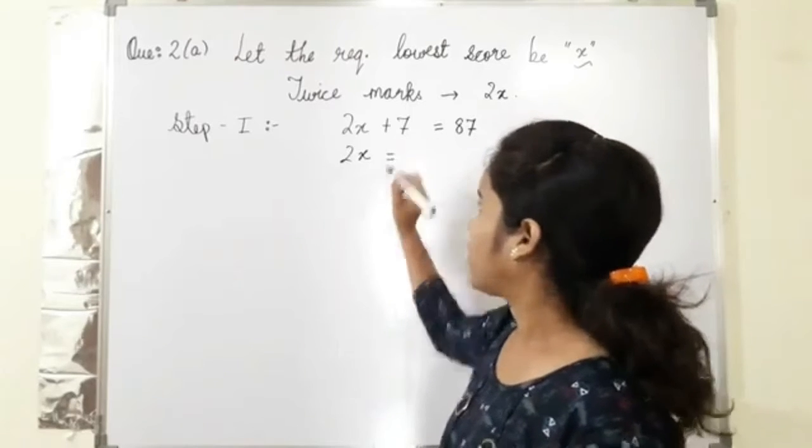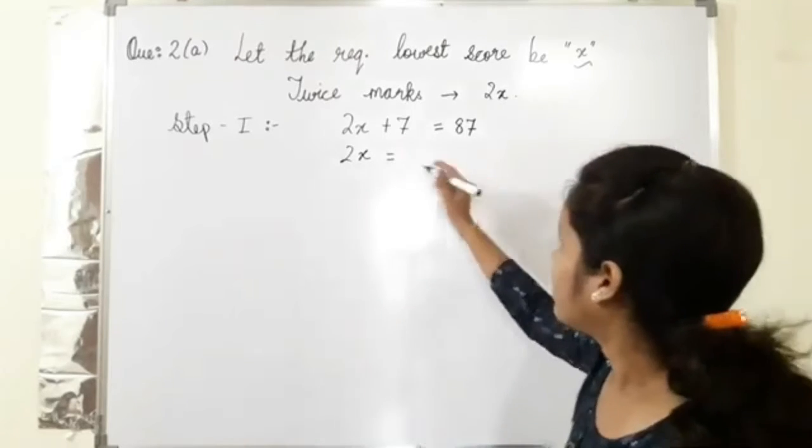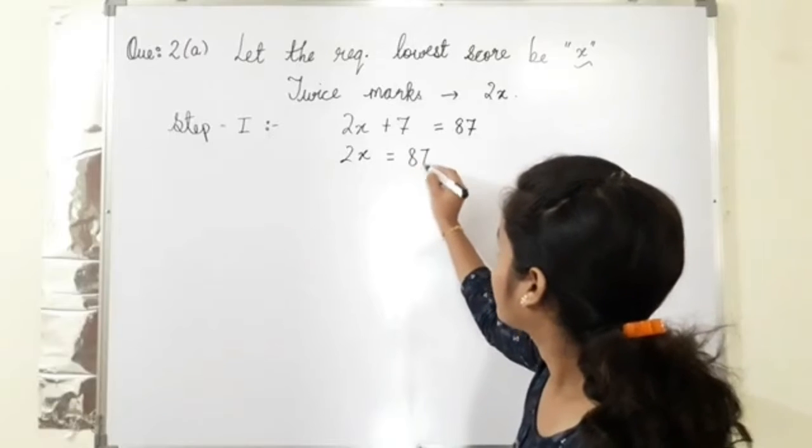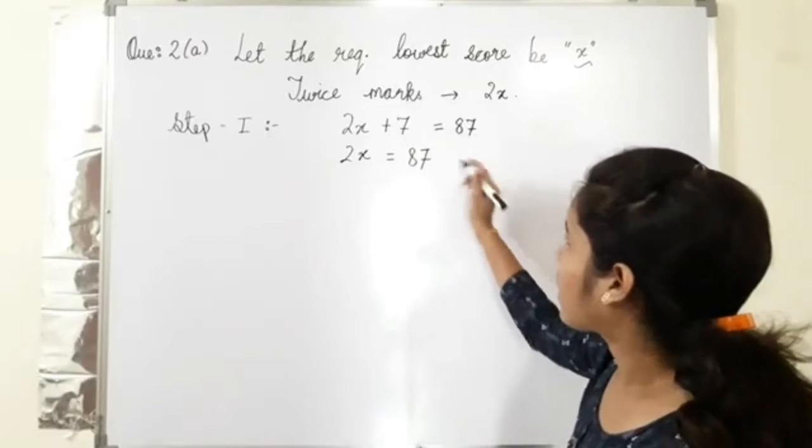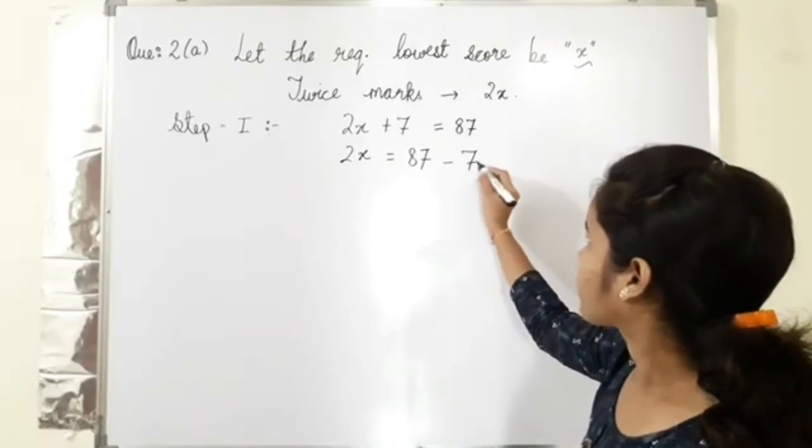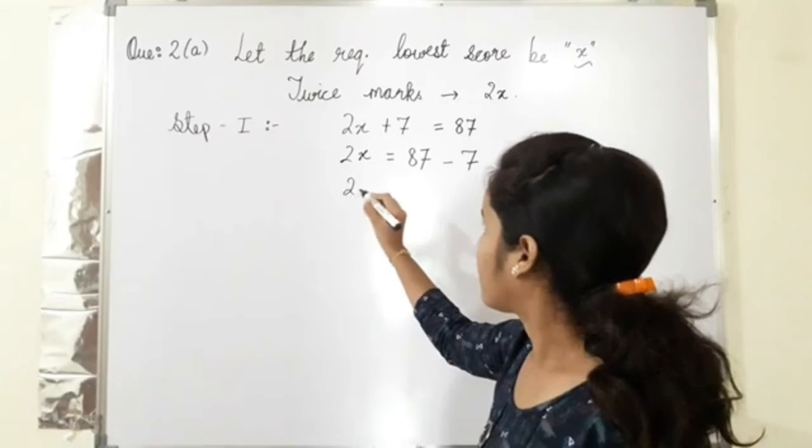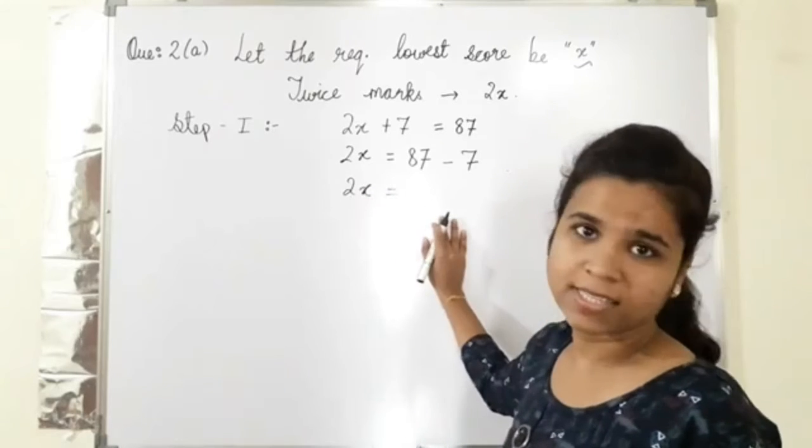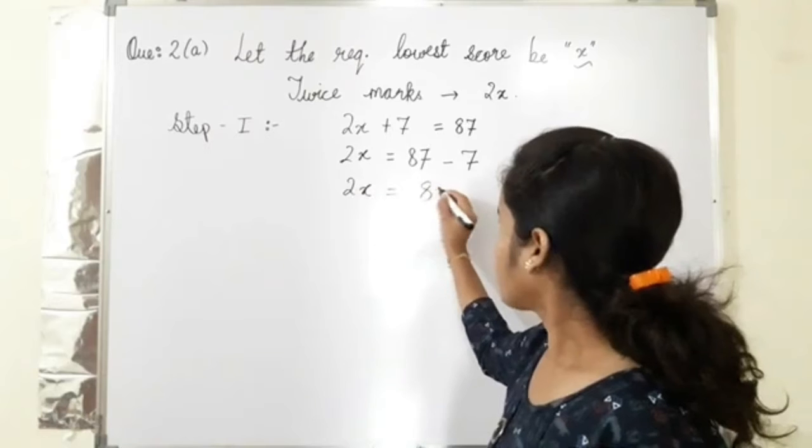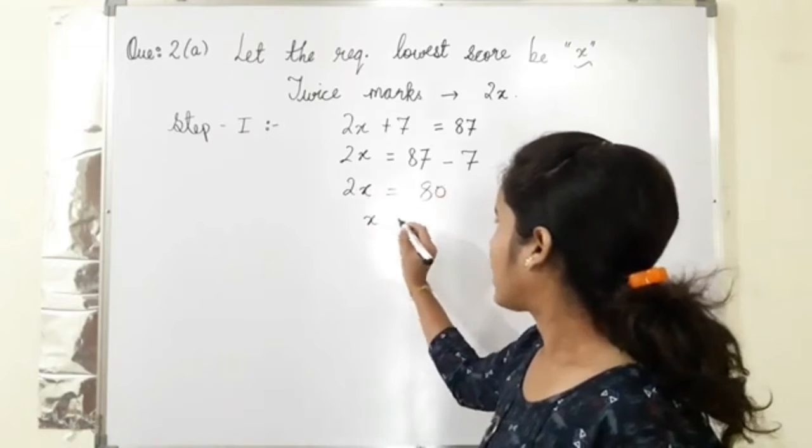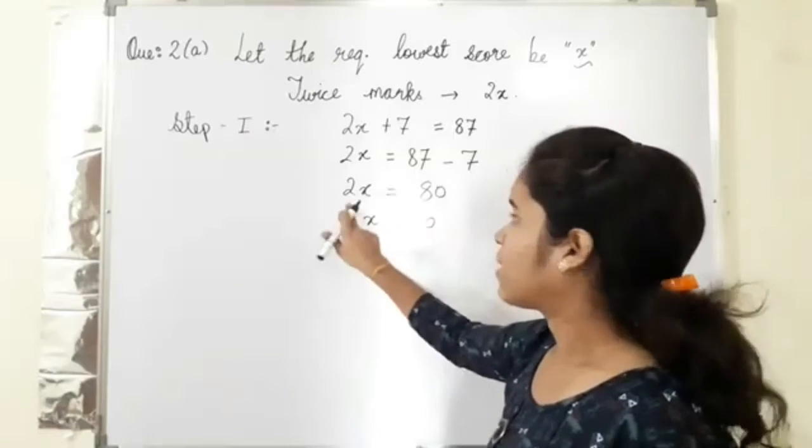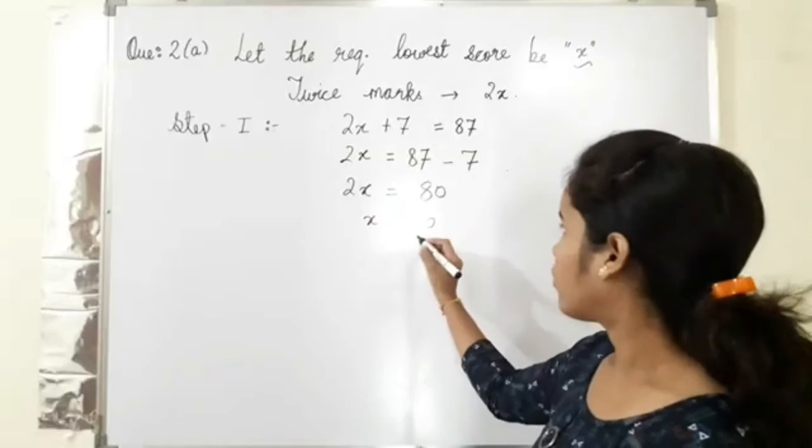We will go to the other side of equal to. Eighty seven as it is, plus 7 on left hand side comes to right side, so it becomes minus 7. 2x as it is, eighty seven minus seven is eighty. Now x equals to eighty as it is, multiply becomes divide.